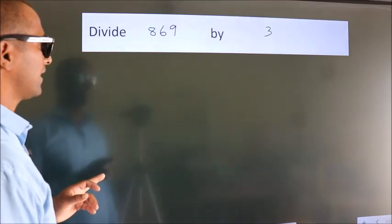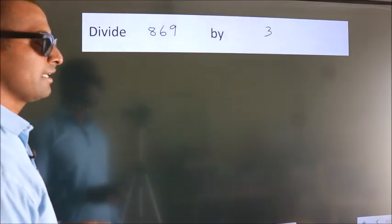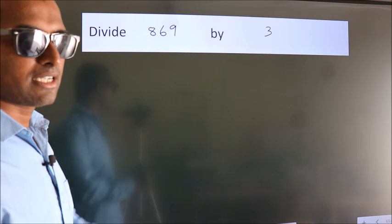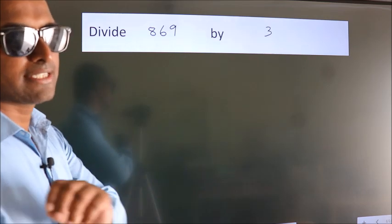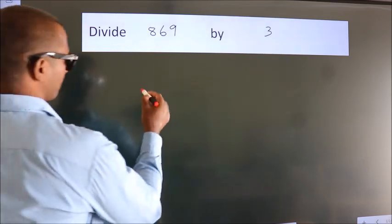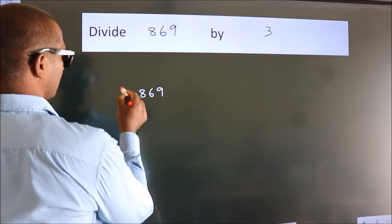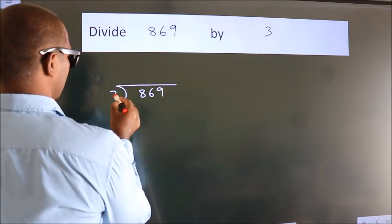Divide 869 by 3. To do this division, we should frame it in this way. 869 here, 3 here.